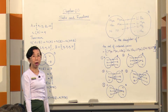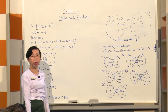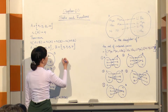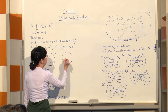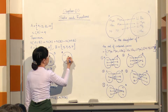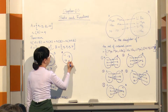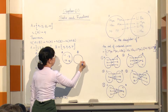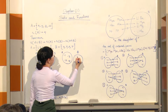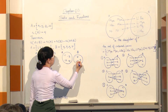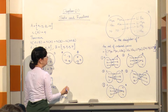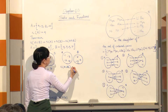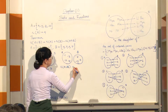It has elements 1, 2, 3, 4. It has elements 5, 6, 7. Number of A union B equals — what do you have? 7.